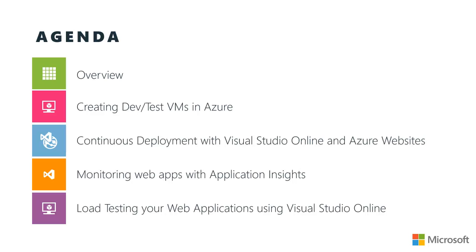The agenda for this video and the ones that follow: we're going to start out with a big picture overview. We'll talk about what Azure is and various ways to gain access to it, and we'll look at Visual Studio Online and see the benefits it offers to developers. Then we'll look at four specific scenarios — starting with creating DevTest VMs in Azure, on either Windows Virtual Machines or Linux distributions. Then we'll look at continuous deployment using Visual Studio Online as our source control repository, letting the build server build our websites and deploy them to an Azure website.